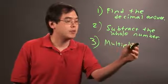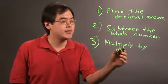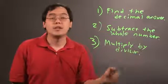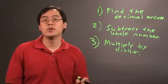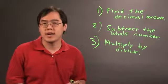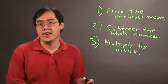Third, you want to multiply by the divisor. The divisor is simply the number that you divided by. So if you have 224 divided by 19, 19 is that divisor.